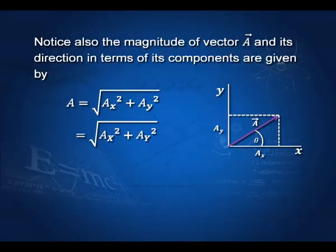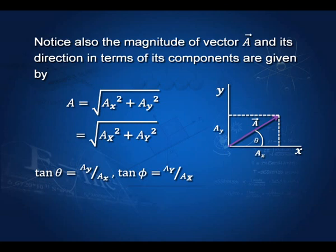Now let us reverse the process. Suppose we are given A X and A Y — how do you find vector A? Simple geometry tells you that the magnitude of vector A equals the square root of A X squared plus A Y squared, whatever set of axes you take. The direction is given by tan theta equals A Y over A X for the standard diagram, or tan phi equals A Y over A X for the tilted diagram. So given components, you can get the vector itself — its magnitude and direction.